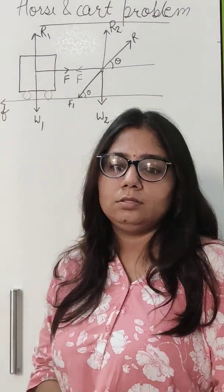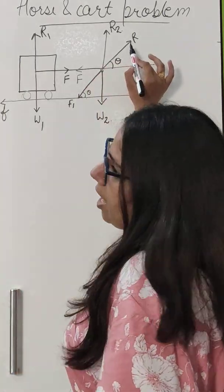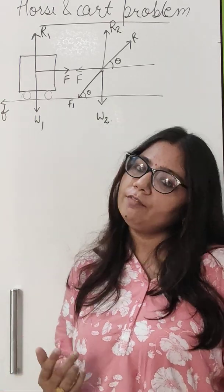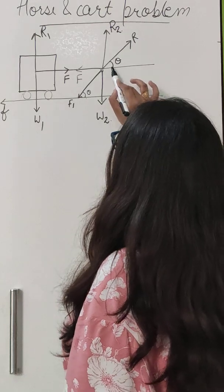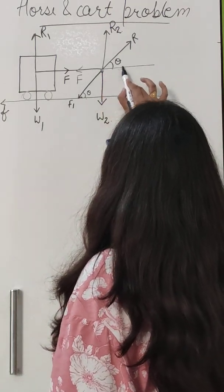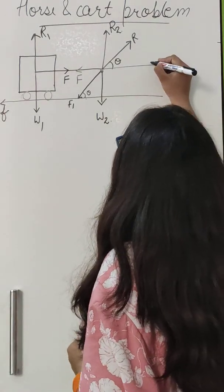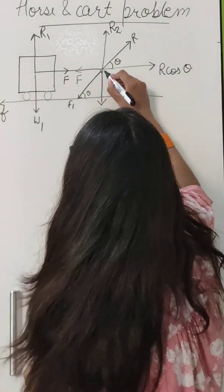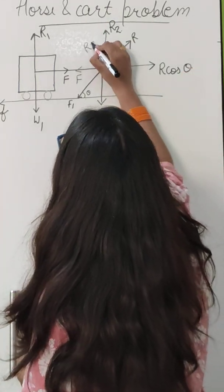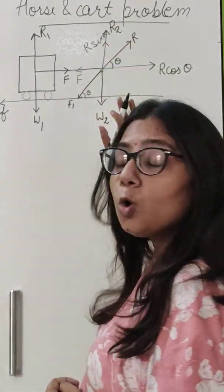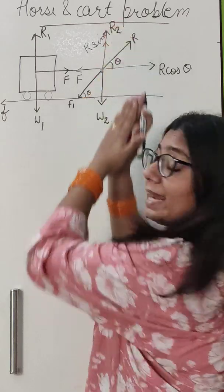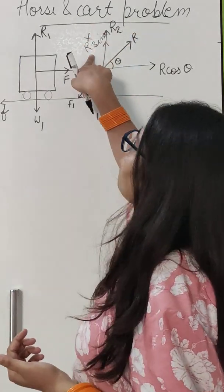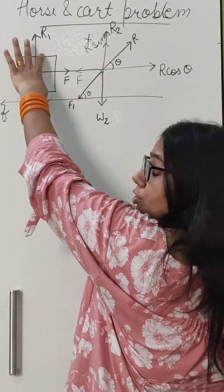Let me resolve the reaction force R. We resolve a force into two components: one horizontal component and one vertical component. The horizontal component is R cos theta and the vertical component is R sin theta. We know that motion is not in the vertical direction — motion is in the horizontal direction. So R sin theta is not responsible for the motion, and the weight and reaction forces are also not responsible for motion.